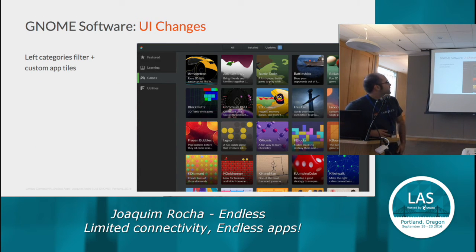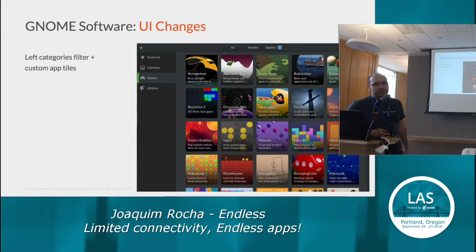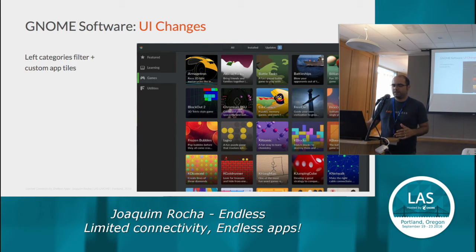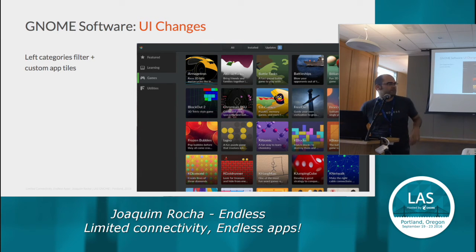A big change is that instead of having categories in the front, we moved the categories to the left on a vertical list, because that's the way our users apparently respond better to using the software. We also have these nice application tiles that we had already before — they're not exactly the icon of the application, but they give a nice hint to the user about what it is. We use those instead of just using the icon.